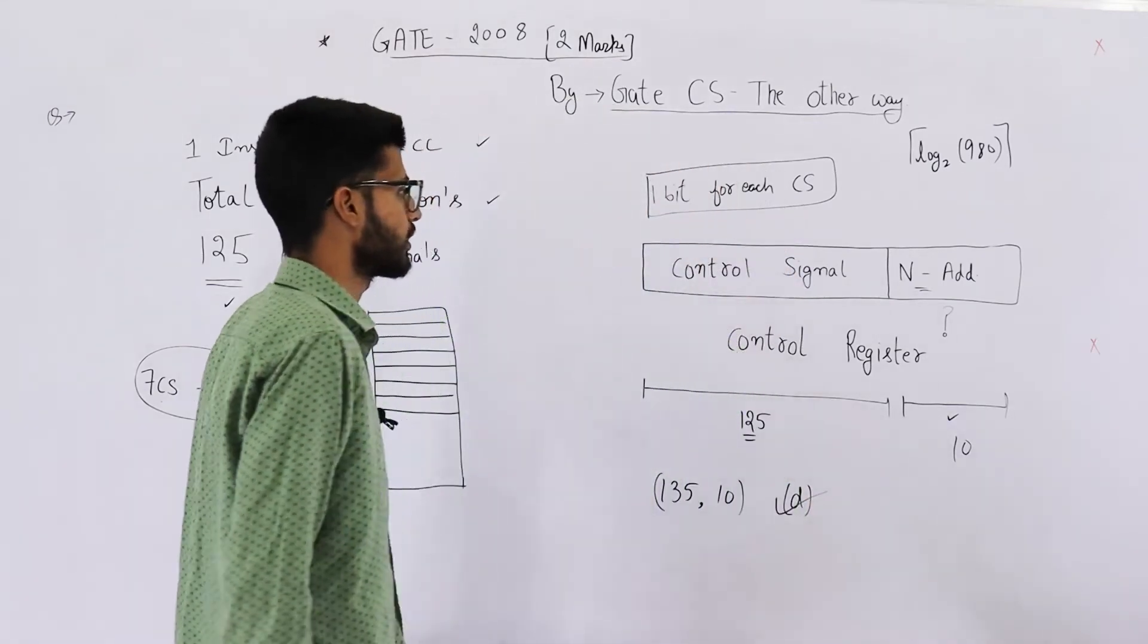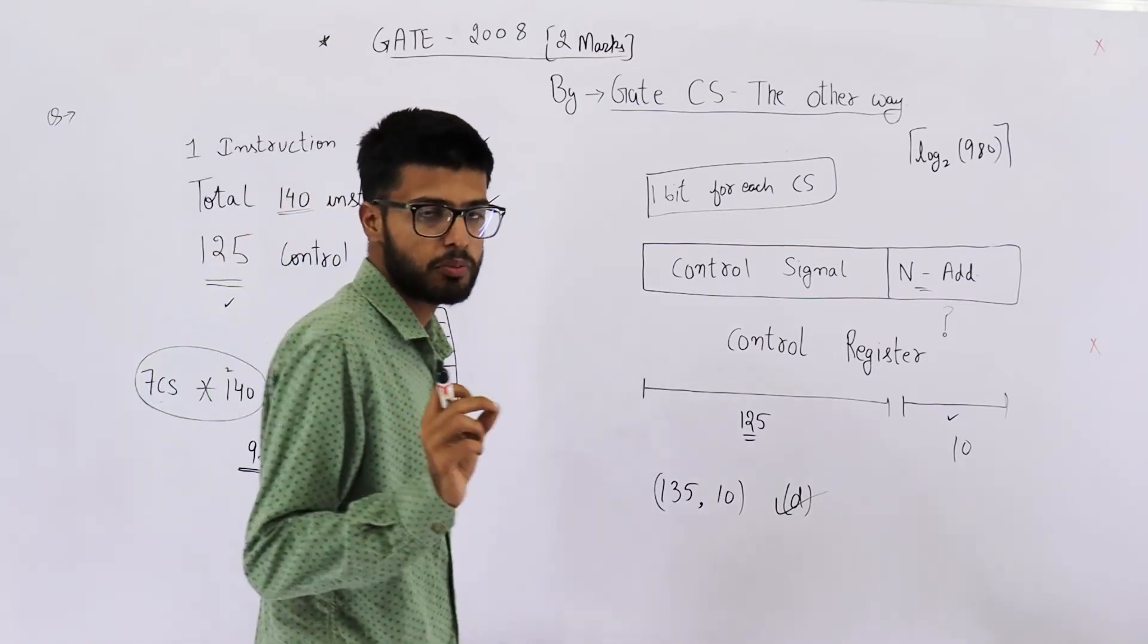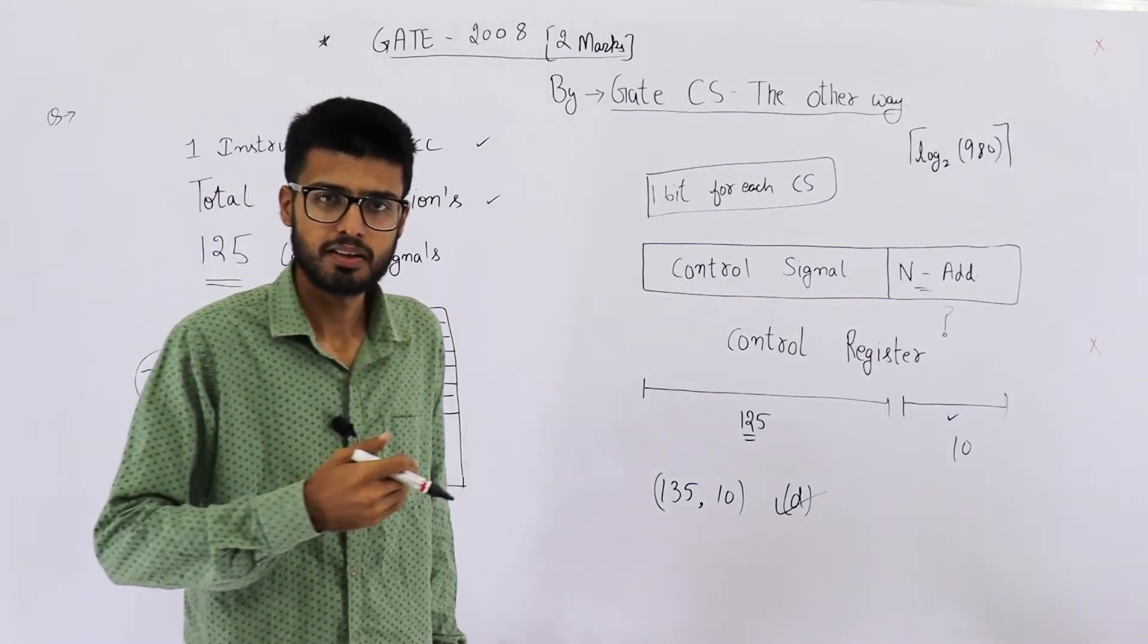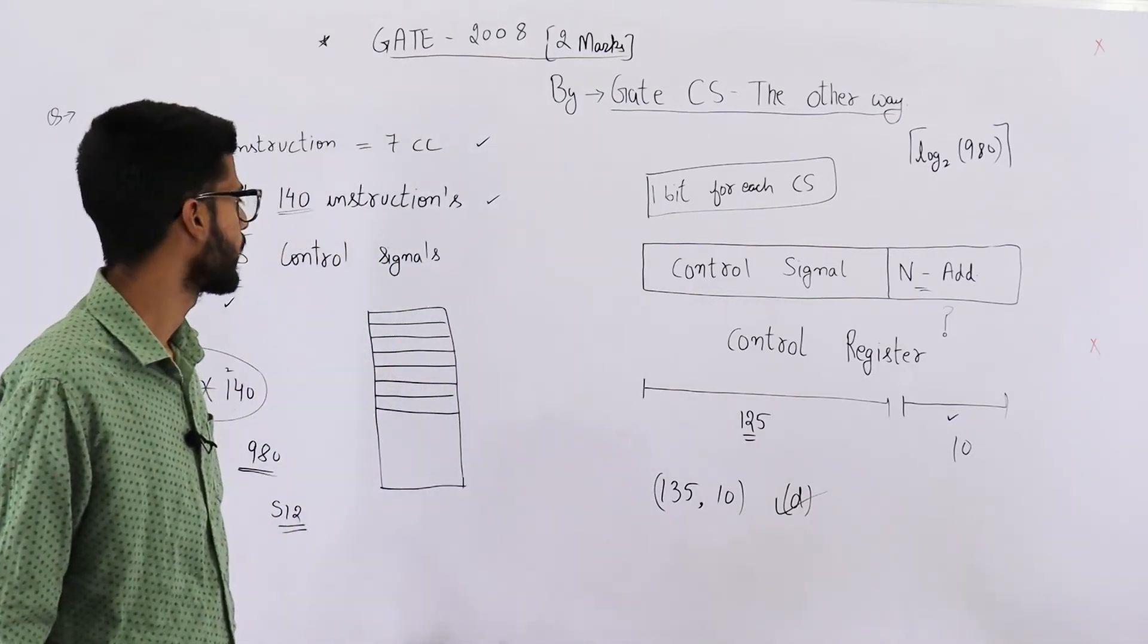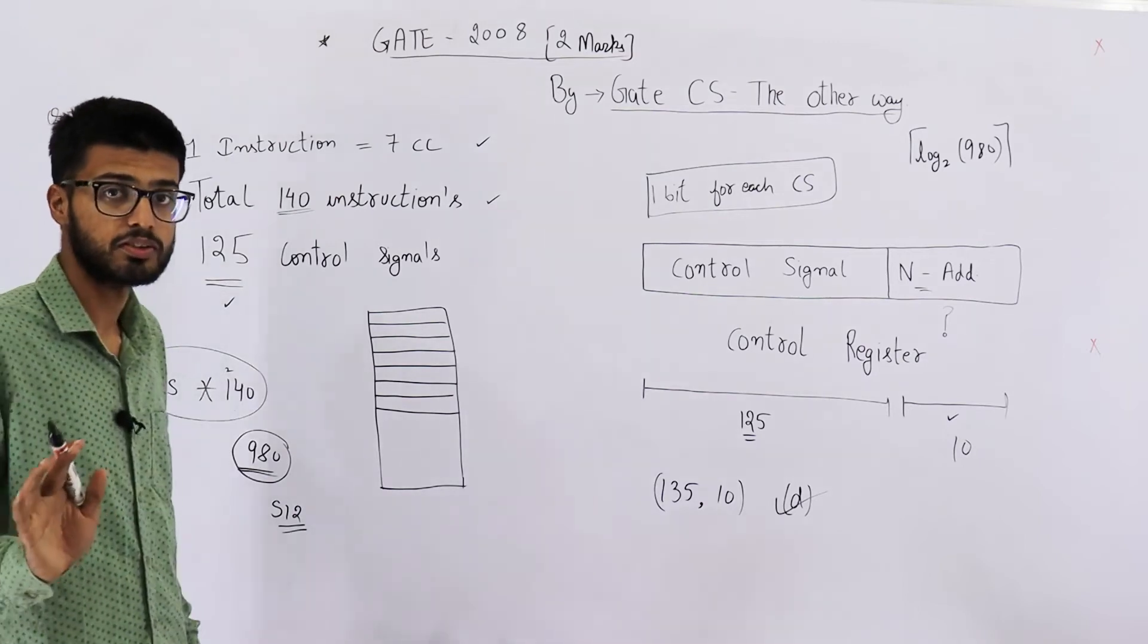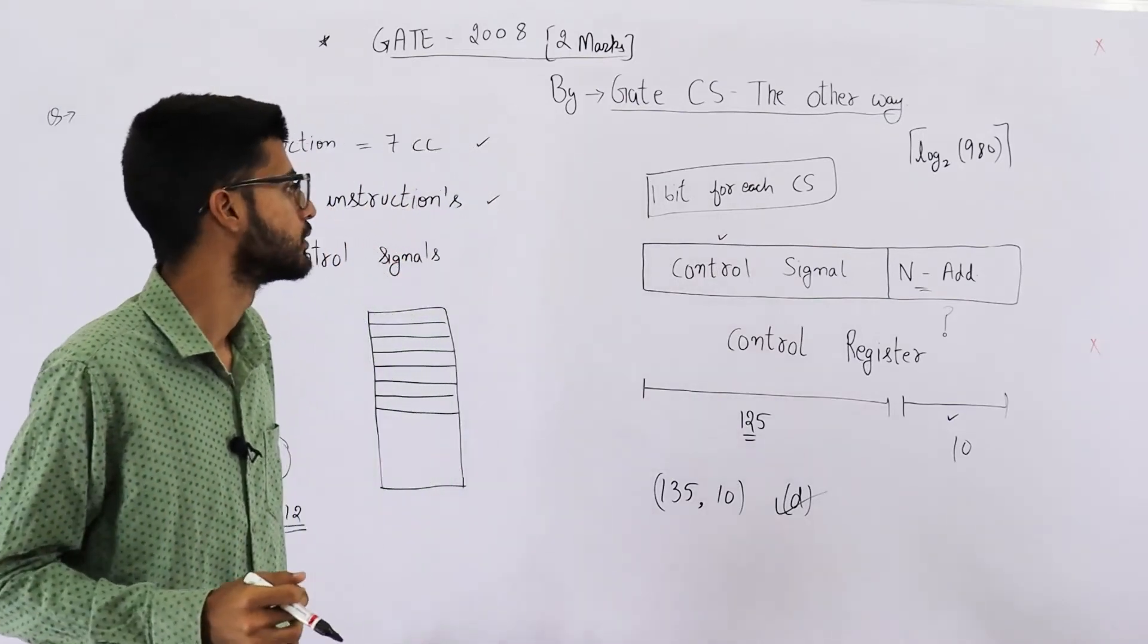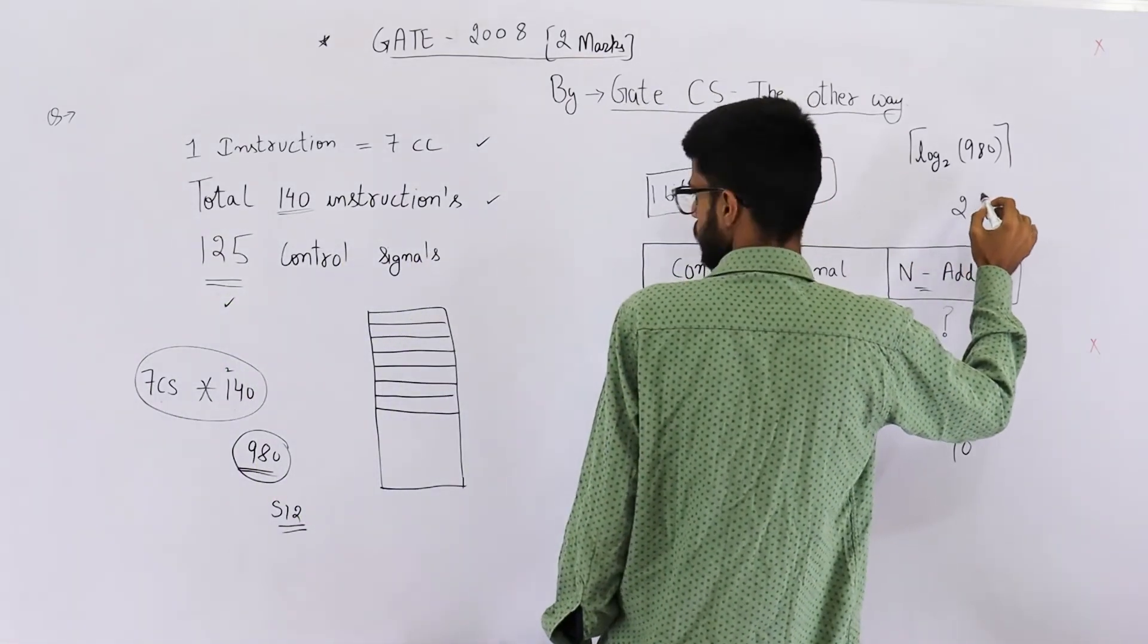Now let me explain the question or these things in a bit more detail. For performing one micro operation you need some control signal. In total there are 125 control signals only. That means all the registers or all the parts of CPU combinedly need a total of 125 signals. So do you think we'll repeat signals here because we are saving 980? No, it's not necessary that signals will repeat because some micro operation may need two of these signals. Some of them might need three and there could be any three. So in total you could generate 2 raised to the power 125 these many signals.